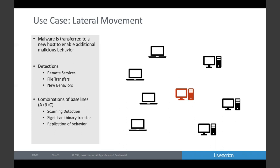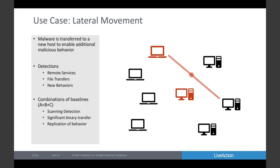Typically following scanning is lateral movement, which is a compound behavior where first a vulnerable host is found, then malware or some form of application is transferred to that host, which then becomes infected and repeats the behavior over time. The combination of those types of behaviors leads to a confirmed lateral movement detection. The kinds of baselines we look for include remote service usage — how often are you connecting to RDP, how many bytes and packets are involved in remote connections, what file transfers are being made and to whom — and then looking for those new behaviors on new adjacent hosts in the graph.